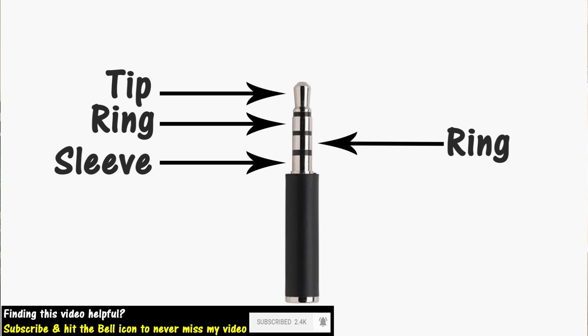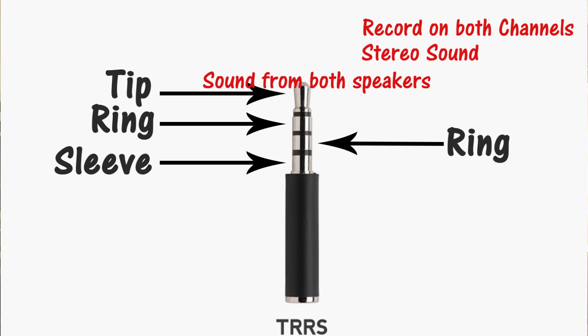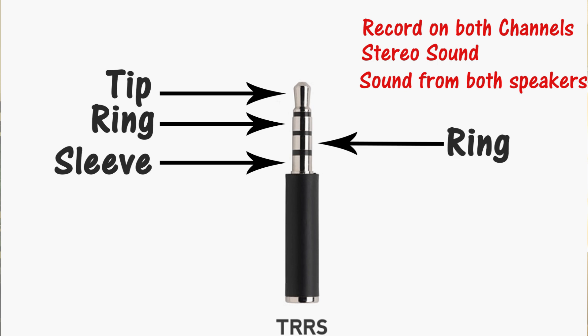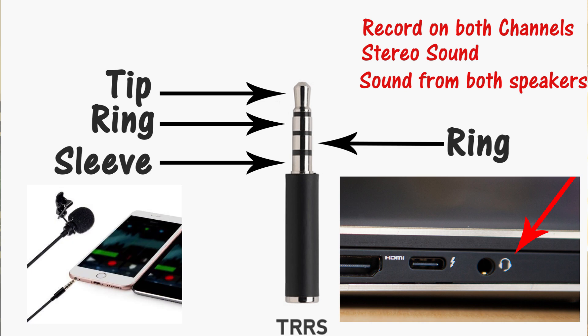Lastly, we have TRRS cables. These are the most recent cables, which you use with your smartphones. These cables also record on two channels so the sound is stereo, but the major difference is that they work on devices that have one port serving as both earphone and microphone — for example, your smartphone. Only a cable with a TRRS connection can be used in those devices. Even if you have a 3.5mm microphone jack that fits in your smartphone, it won't record — you actually need a TRRS connection.